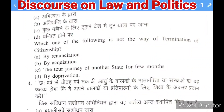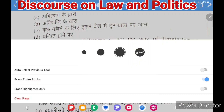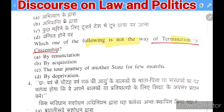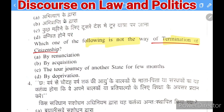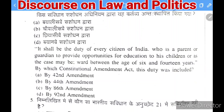Next question: which one of the following is NOT a way of termination of citizenship? Options: (A) by renunciation, (B) by acquisition of another state's citizenship, (C) tour/journey of another state for a few months, (D) by deprivation. Renunciation, acquisition, and deprivation are all valid modes of termination. Option C is correct — merely visiting another nation for a few months does not cause loss of citizenship.